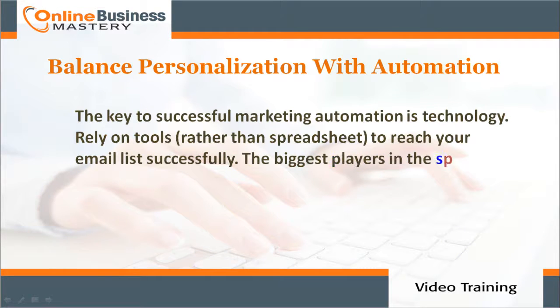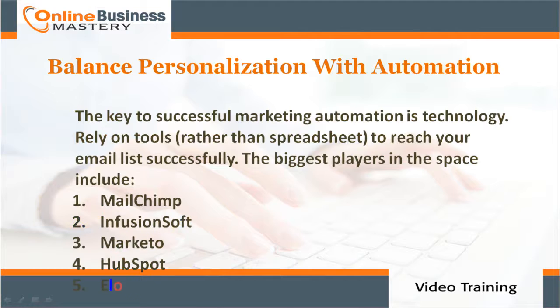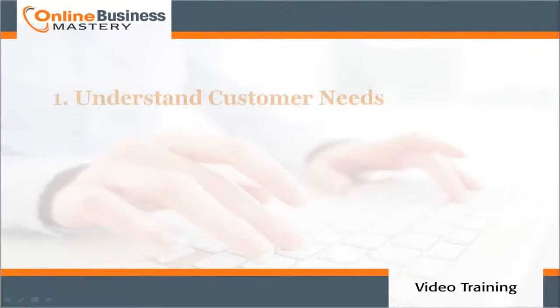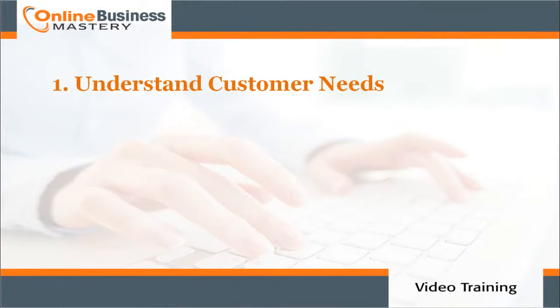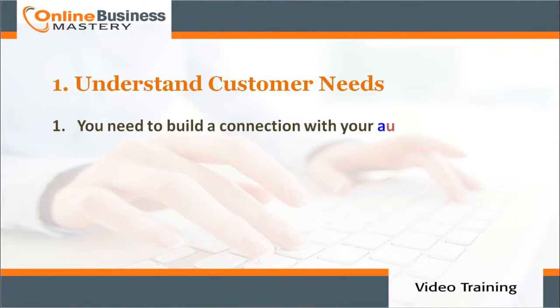Balance personalization with automation. The key to successful marketing automation is technology — rely on tools rather than spreadsheets to reach your email list successfully. The biggest players in the space include: number one, MailChimp; number two, Infusionsoft; number three, Marketo; number four, HubSpot; number five, Eloqua.